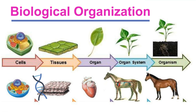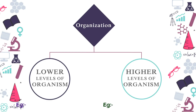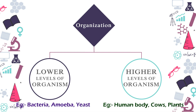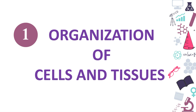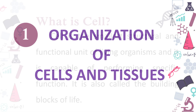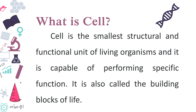It goes like: cell, tissue, organ, organ system, and organism. Each of these represents a level of organization and hierarchy. These organizations are of two levels — lower levels and higher levels of organism. First, we are going to learn about the organization of cells and tissues.